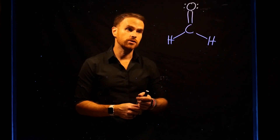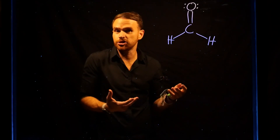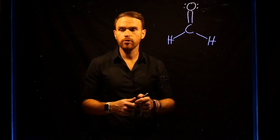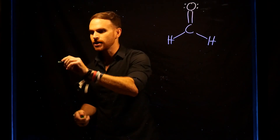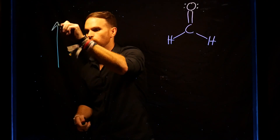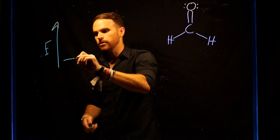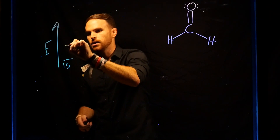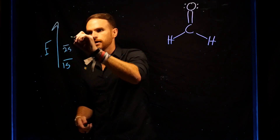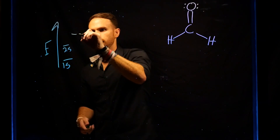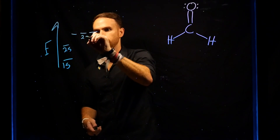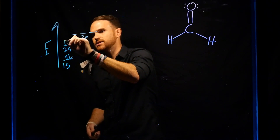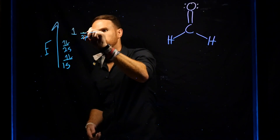First, we can determine the hybridization around each atom. Let's look at carbon. Remember that the full electron configuration for carbon arises from the electron energy diagram, where carbon has six total electrons.